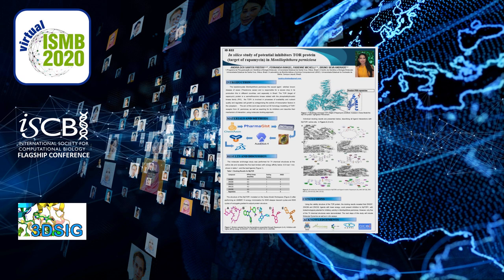Moniliophthora perniciosa is a fungal hemibiotrophic pathogen which causes morphological, histological, and physiological changes during the parasite-host interaction. It has two distinctive phases in its life cycle: the first phase is biotrophic with monocaryotic hyphae, and the second is the necrotrophic phase with dikaryotic hyphae.